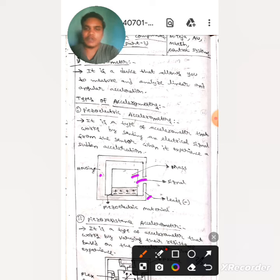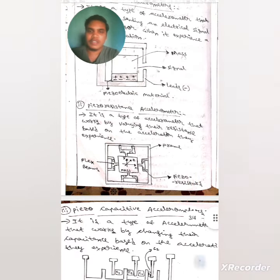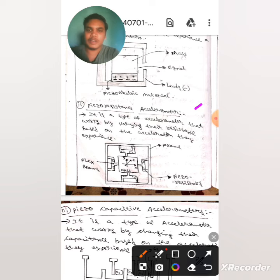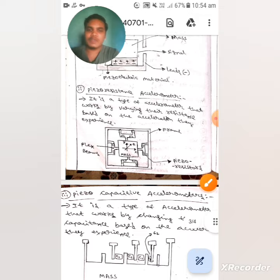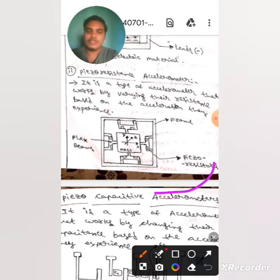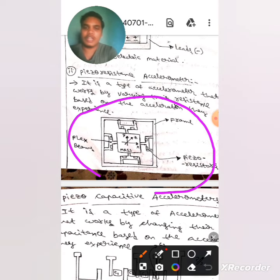The next one is piezoresistive accelerometer. It is a type of accelerometer that works by varying the resistance based on the acceleration they experience. If you observe here, this whole diagram represents piezoresistive accelerometer. If you want, you can take a screenshot.